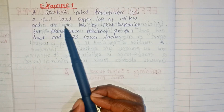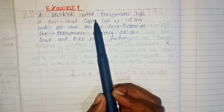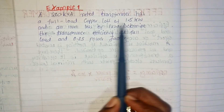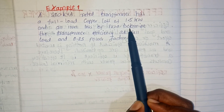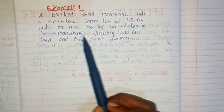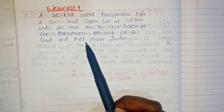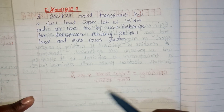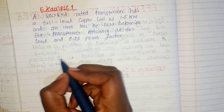Here is our example. A 200 kVA rated transformer has a full-load copper loss of 1.5 kilowatts and an iron loss of 1 kilowatt. We are required to determine the transformer efficiency at full load and 0.85 power factor. Let's write down what we are given.